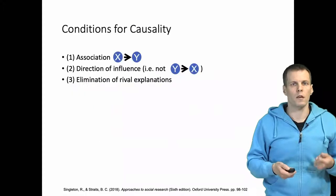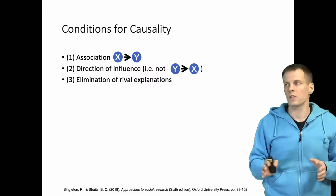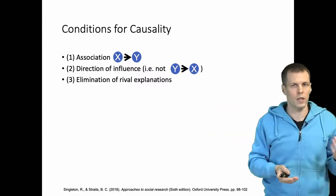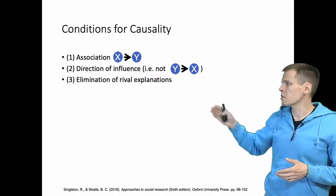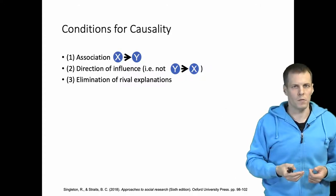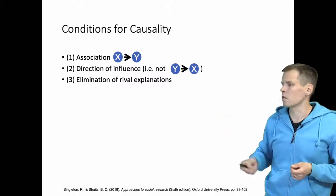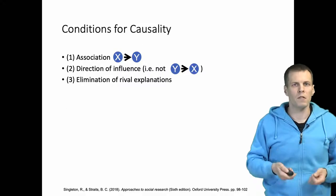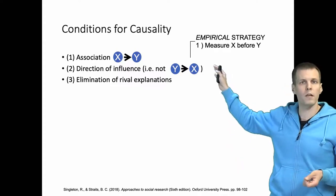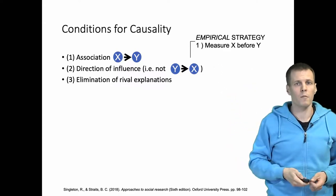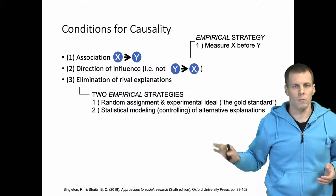So what do we actually need to make a causal claim? We need to understand the three conditions for causality. This observation satisfies the association condition — we see that X and Y are related, and that's one condition. We also need to establish the actual direction of influence and elimination of rival explanations. How we normally deal with direction of influence is that we measure the cause before the effect — measure X, the CEO gender, before the ROA. For elimination of rival explanations, we can use statistical controls or run an experiment, but that's beyond this video.